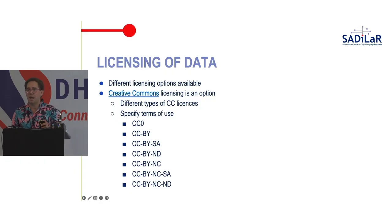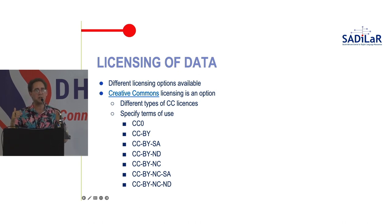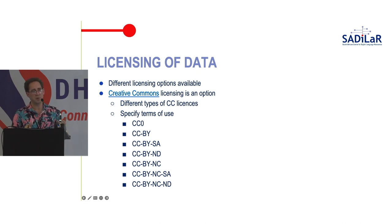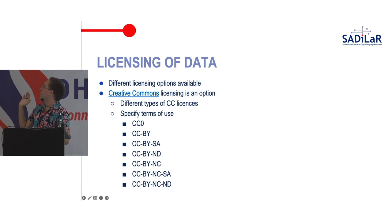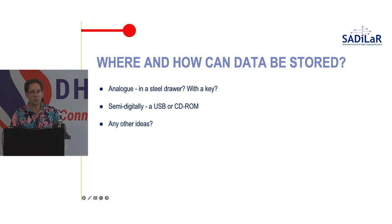On licensing: Creative Commons licenses have different meanings — I've put up all the combinations available. Douglas isn't here but you can read all about them on the Creative Commons website. The license helps people understand what they can do with your data once it's published: can they use it commercially, is it totally free, is it in the public domain, can they remix or reuse it, or should it only be used as published?